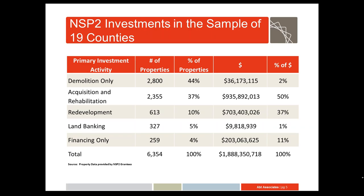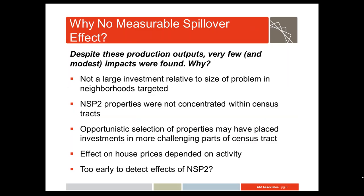Forty-four percent of all of the treated properties were just demolished. On the other hand, as you can see from the dollar column on the slide, very large amounts of grant funds were spent on acquisition and rehab and on redevelopment. Grantee approaches — the mix of these different activities — varied considerably by community, based on the strength of housing markets, what the grantees thought would work, or sometimes pre-existing plans for neighborhood revitalization.